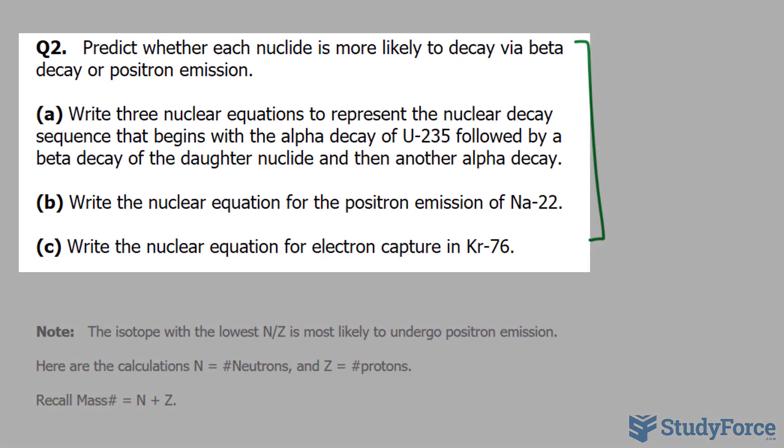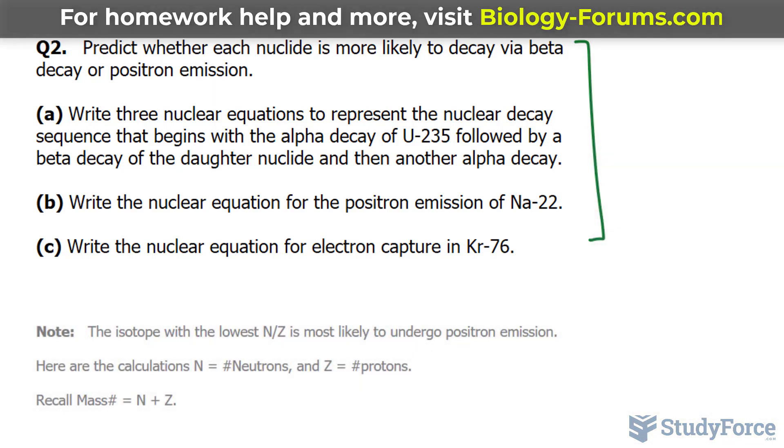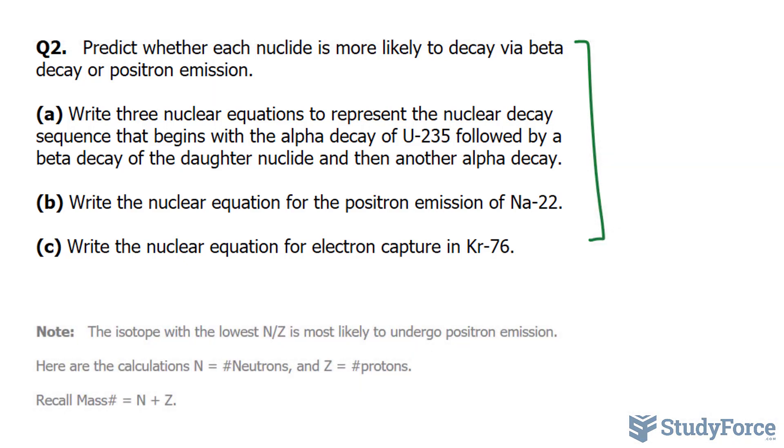We ended off with question number two and we're asked to predict whether each nuclide is more likely to decay via beta decay or positron emission. This question is broken down into three parts A, B, and C. Specifically in A, we have to write three nuclear equations to represent the nuclear decay sequence that begins with the alpha decay of uranium-235, followed by beta decay of the daughter nuclide, and another alpha decay.